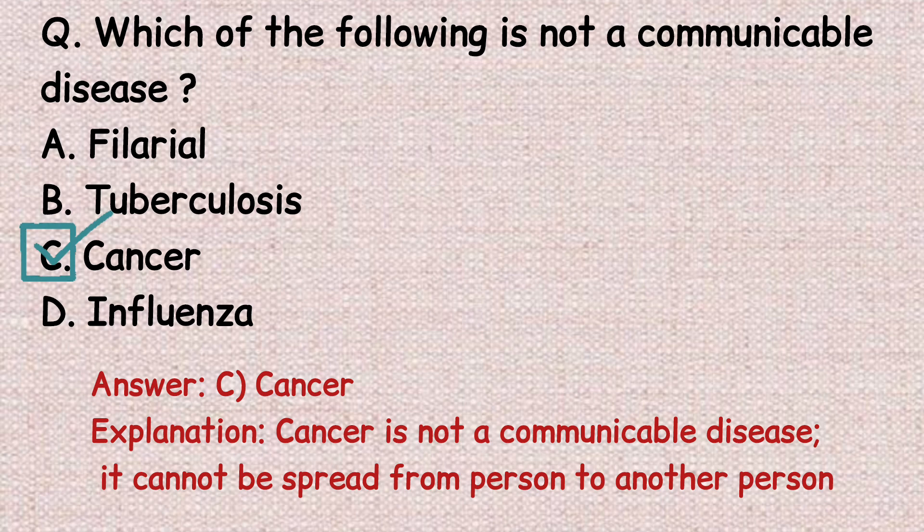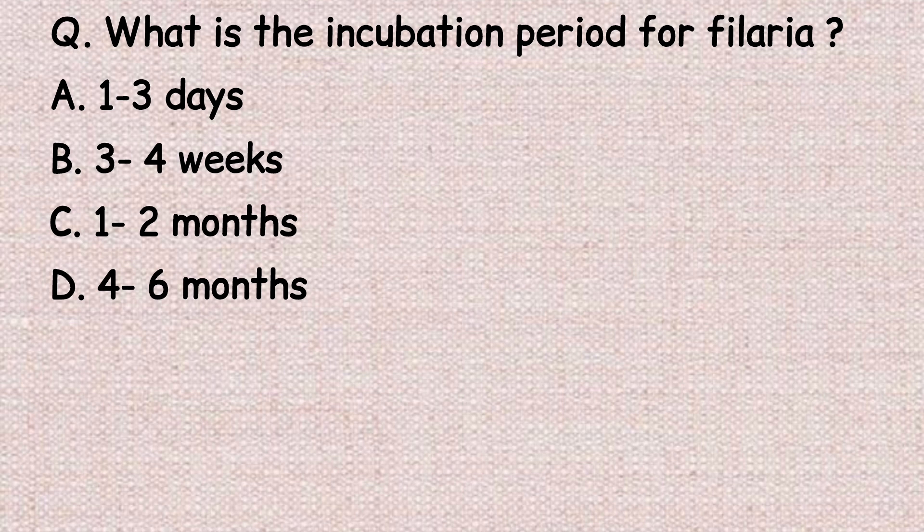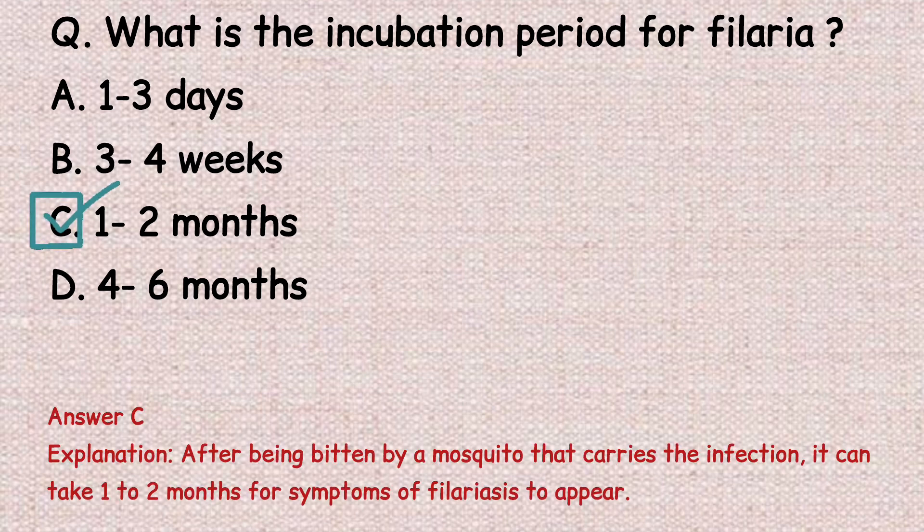The next question: what is the incubation period for filariasis? Option A: 1 to 3 days. Option B: 3 to 4 weeks. Option C: 1 to 2 months. Option D: 4 to 6 months. The correct answer is option C, 1 to 2 months. After being bitten by a mosquito that carries the infection, it can take 1 to 2 months for symptoms of filariasis to appear.